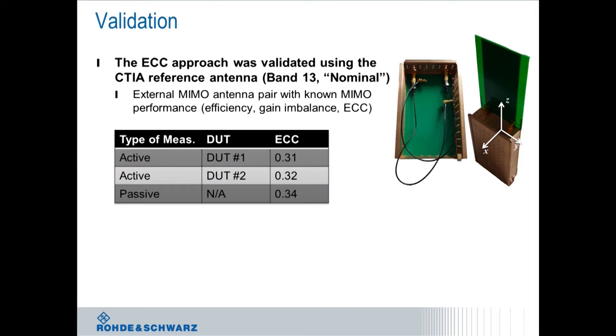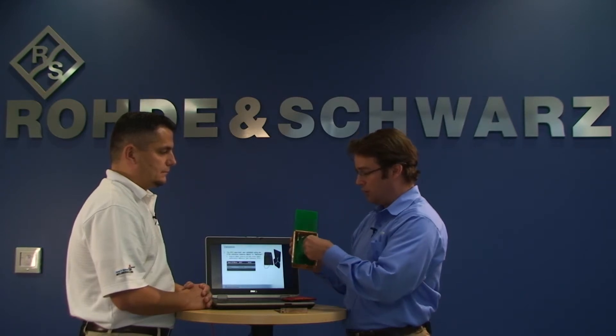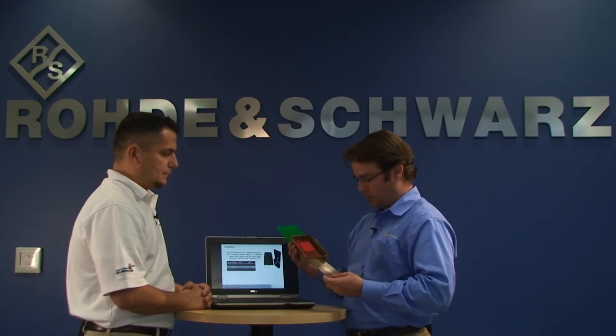In order to validate this new approach — both to us and to industry — we utilized the CTI reference antenna. This is an external antenna with two antennas designed on a PCB, connected with RF connectors to RF cables inside the cage. For the active approach, you take a device under test with a test app on it, put it inside the cage, connect the RF connectors to the primary and secondary ports of the device under test, and close up the lid. With that, you have a reference device connected to an external reference antenna with known MIMO antenna performance: known efficiency, known gain imbalance, and known ECC.